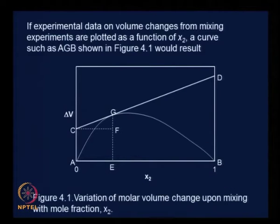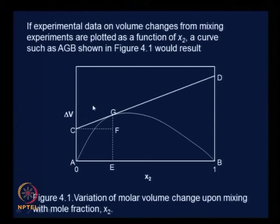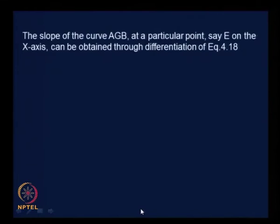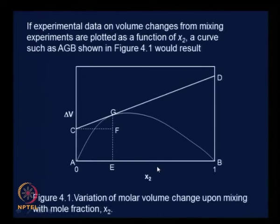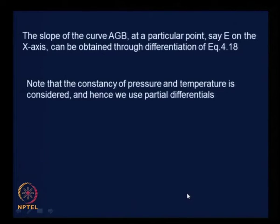Let me start working this out for you and give you some hints and help you get to the solution. As we had seen, this is nothing but delta V versus X₂. This is the curve AGB that we will get, the variation in molar volume change upon mixing as a function of X₂. The slope of the curve AGB at a particular point E on the X-axis, you know this particular point E, at this point, what would be the slope here is nothing but the derivative.